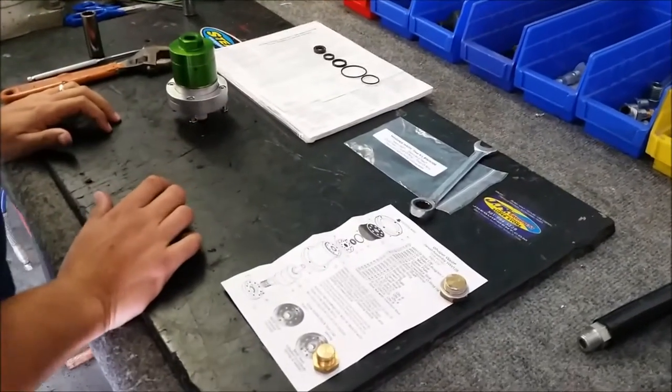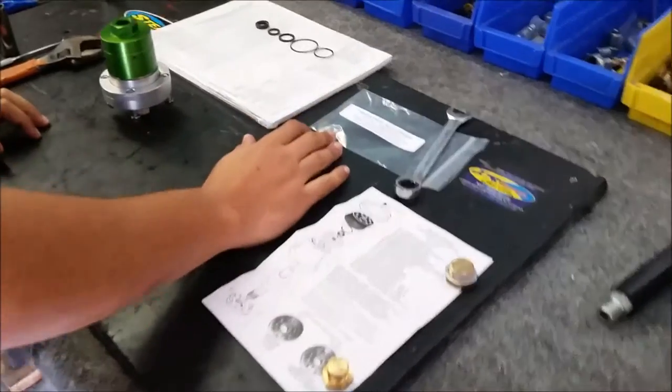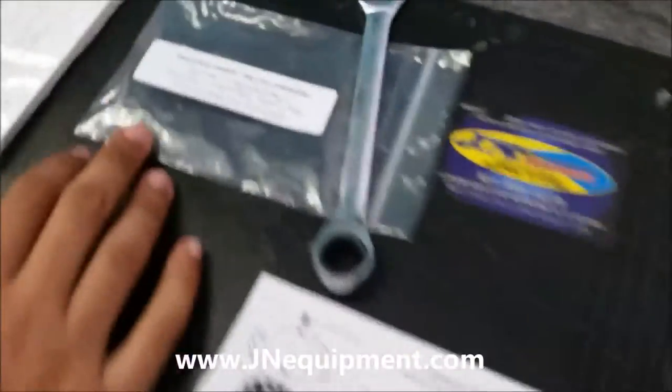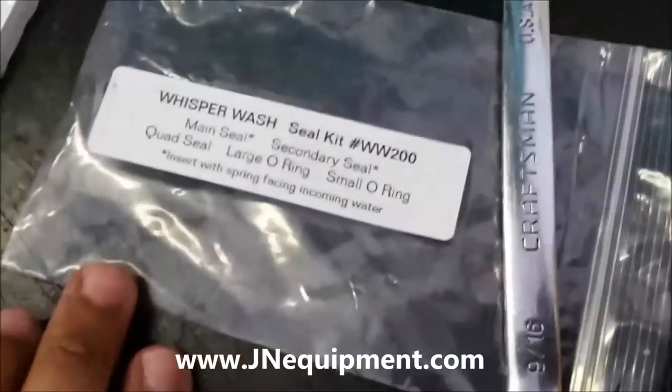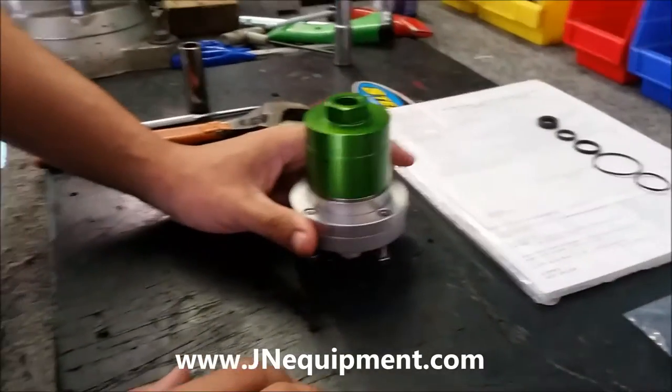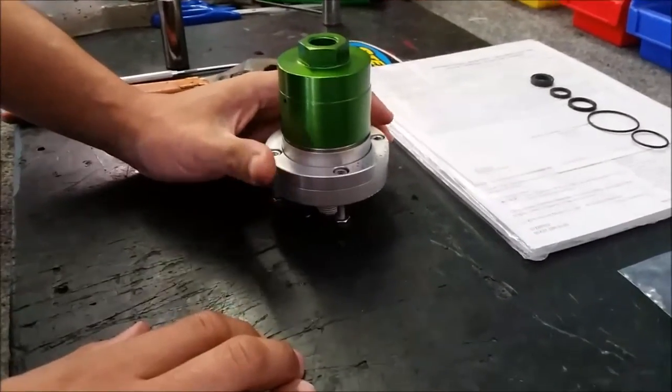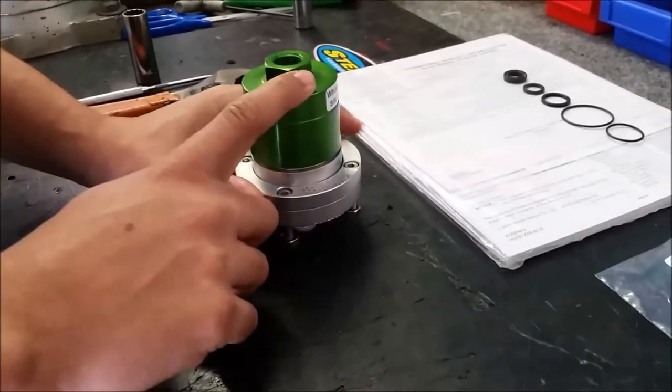Alright, today I'll be showing you how to change your seal kit, which is part number WW200, on your whisper wash series 3 swivel. This is going to be for any whisper wash swivel, especially those with the green cap.